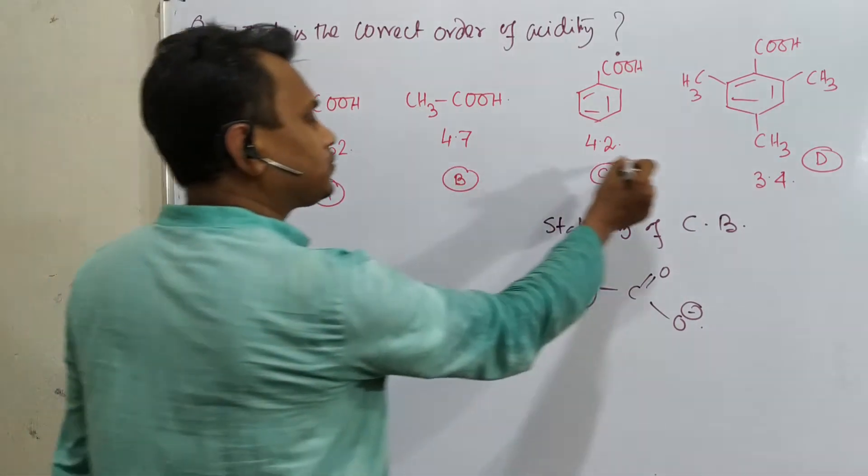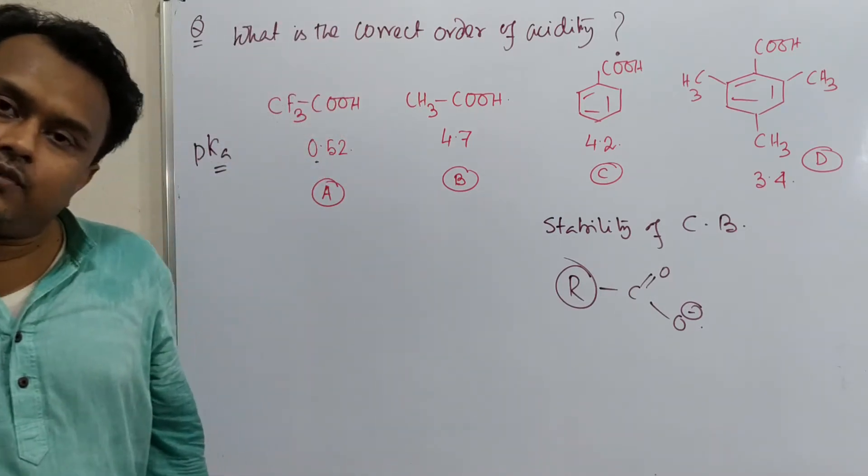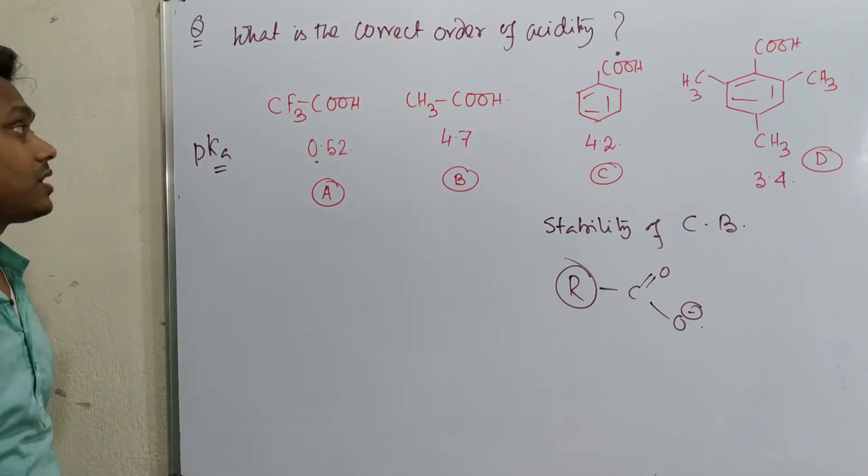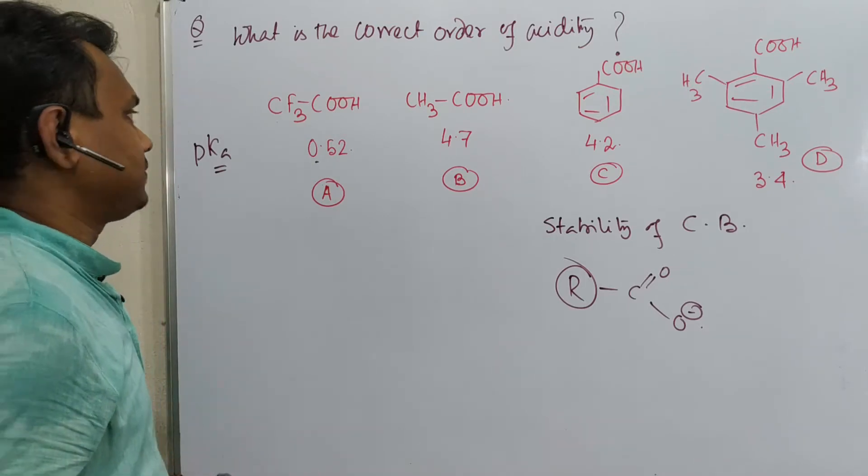This is 0.52. From here you can understand which one is a very strong acid, which one is not. Now the question is, why this trend?